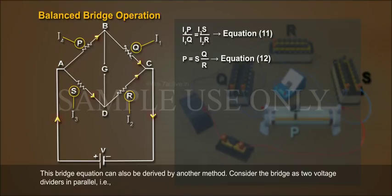This bridge equation can also be derived by another method. Consider the bridge as two voltage dividers in parallel. That is, EBC equals V times Q by Q plus P, and ECD equals V times R by R plus S, Equation 13.